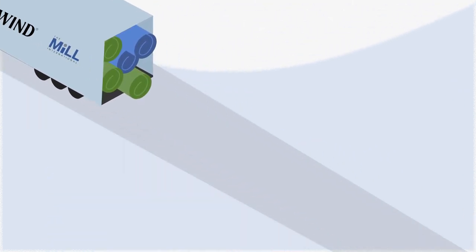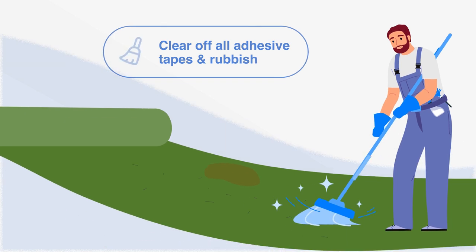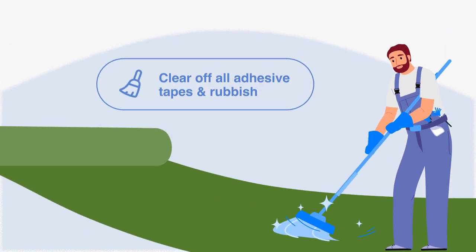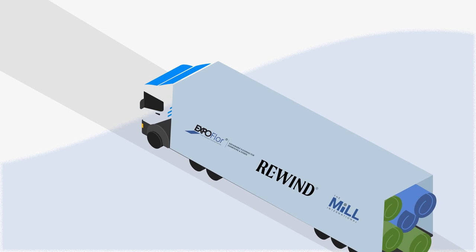First, we collect them back from the site to be processed for recycling. Clear off all adhesive tapes and rubbish. Our processed carpet is sent to the recycling plant in Singapore.